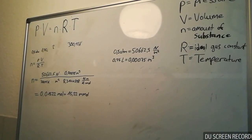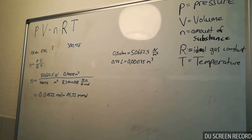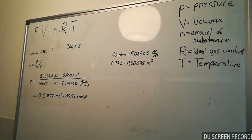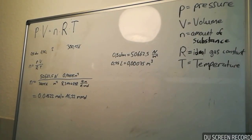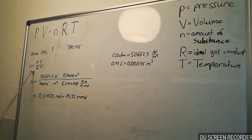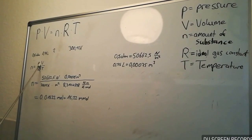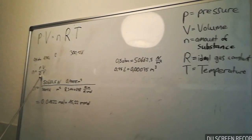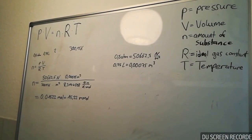For our second calculation, we want to apply the formula to find out the amount of substance. Therefore, you have to transform the formula to: n is equal to pressure multiplied with volume divided by the ideal gas constant multiplied with the temperature.